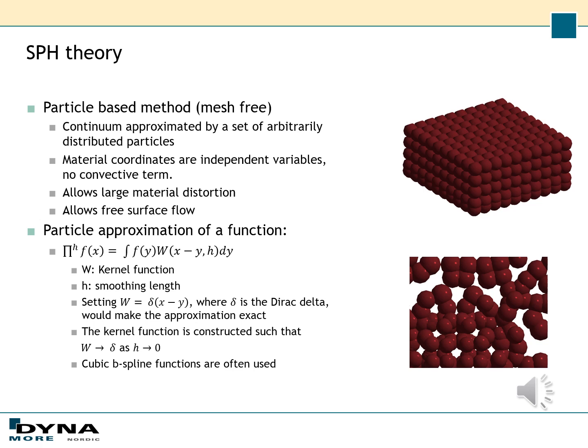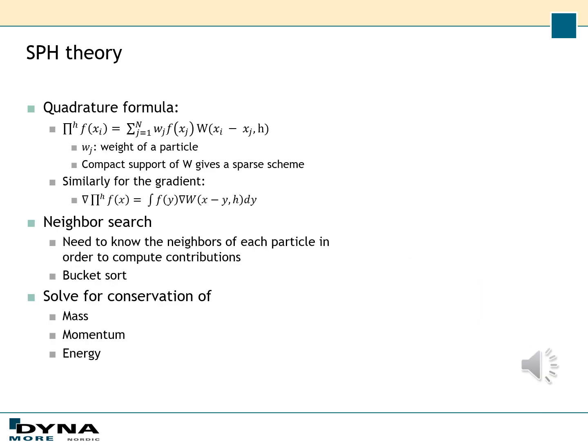Very often cubic B-spline functions are used. We can apply a quadrature formula to our particle approximation, where W is the weight of particle J. If the kernel function W has compact support, we will get a sparse scheme, which is desirable from a numerical point of view. We also get a similar expression for the gradient of our approximation. Since this is a particle-based method, an important aspect is the neighbor search, since we need to know the neighbors of each particle in order to compute the contribution. This is done in LS-Dyna by a bucket sort, similar to the contact search algorithm.